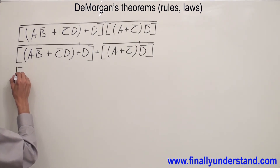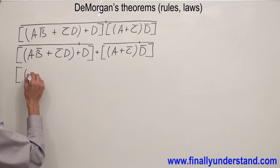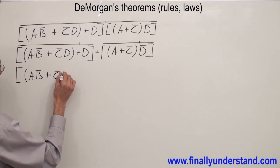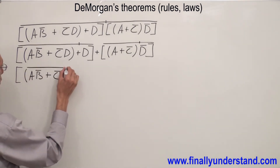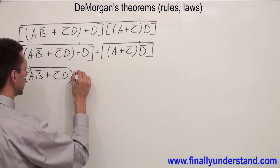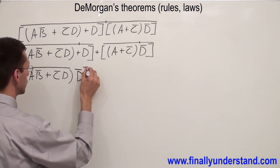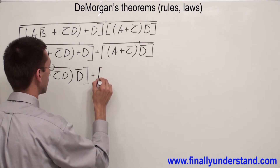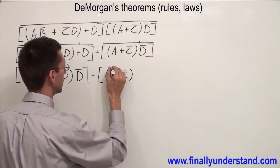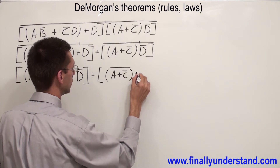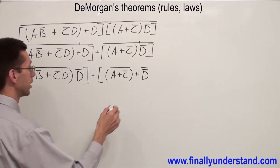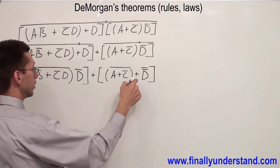Let me rewrite this problem one more time. I'm going to have A, B̄ OR C̄D with bar. OR has to be changed to AND, so I'm going to have D̄ here. Close the brackets, OR. In this case, I'm going to have (A OR C̄) with the bar, OR D̄. Remember, any time we have variables inverted twice, these two inversions are going to cancel each other.